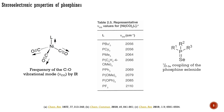Alternatively, the electron-donating ability of phosphines can be quantified from carbonyl complexes of other metals or by measuring the phosphorus-selenium coupling constant of corresponding phosphine selenides.